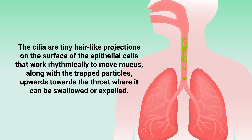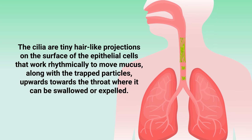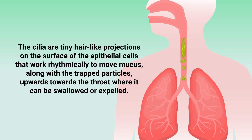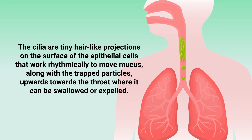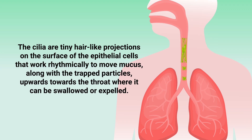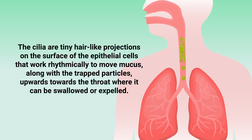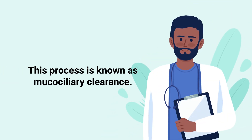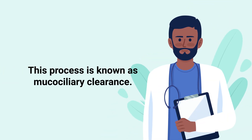The cilia are tiny hair-like projections on the surface of the epithelial cells that work rhythmically to move mucus, along with trapped particles, upwards towards the throat, where it can be swallowed or expelled. This process is known as mucociliary clearance.